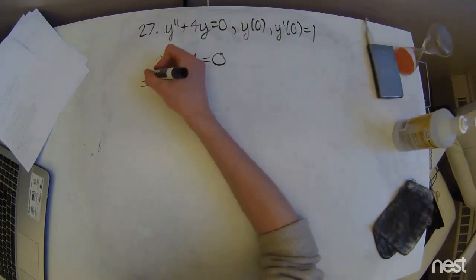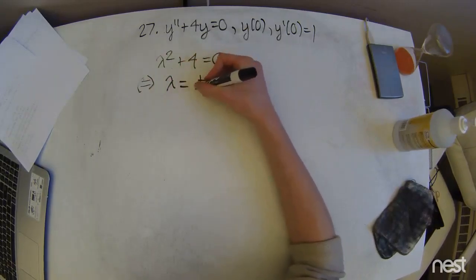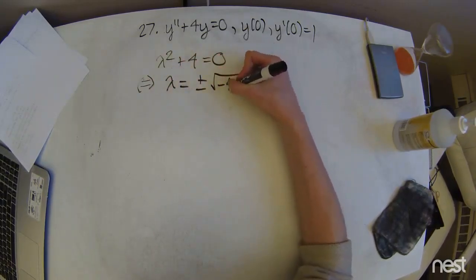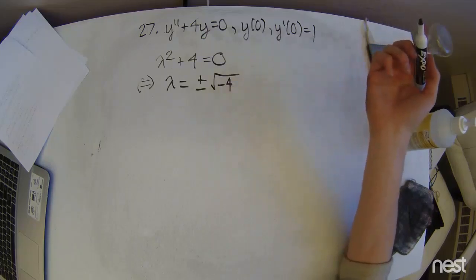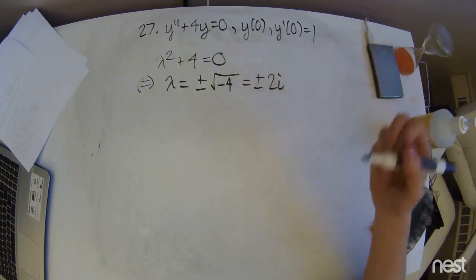Then solving this out, we're going to get that lambda equals plus or minus the square root of negative 4. And that's definitely complex roots going on there. So we're going to get plus or minus 2i.